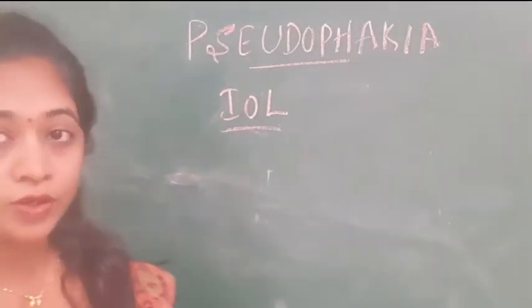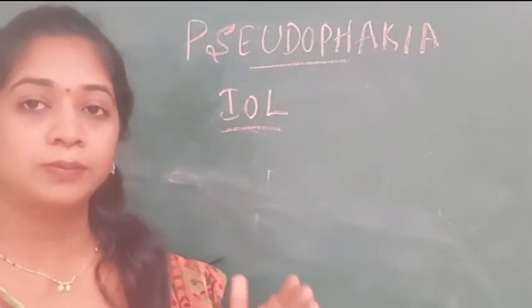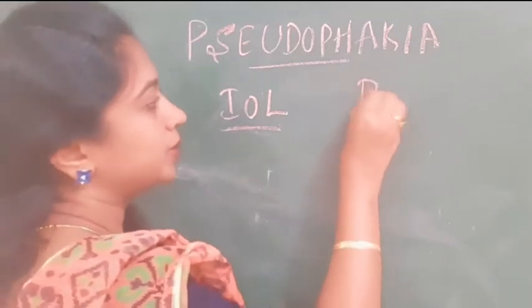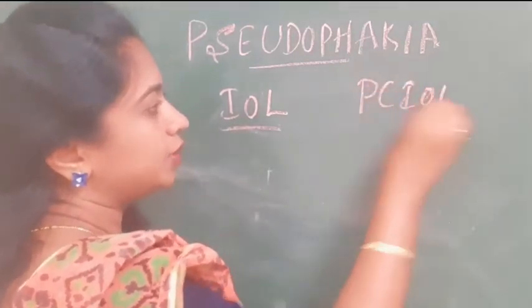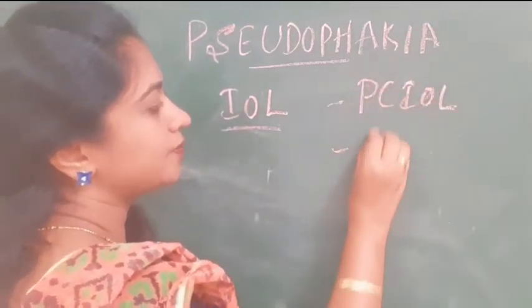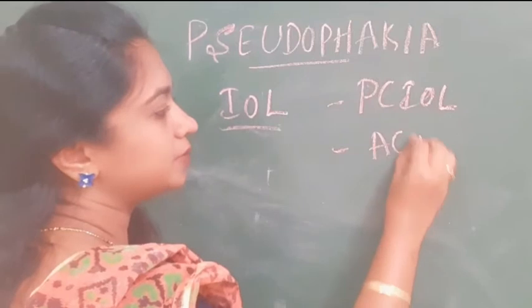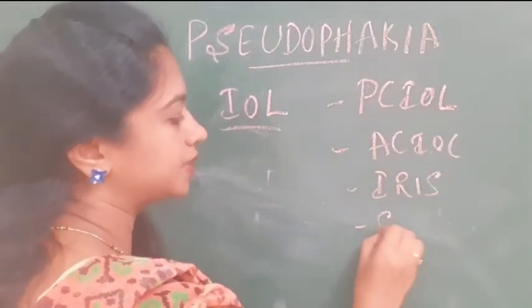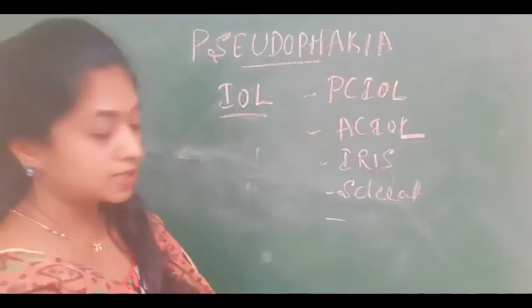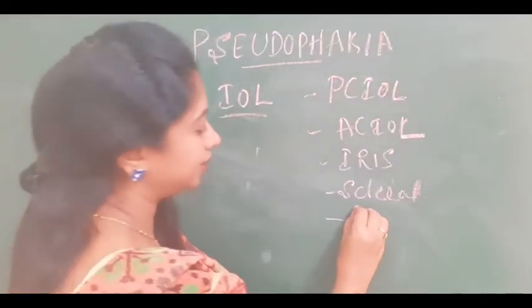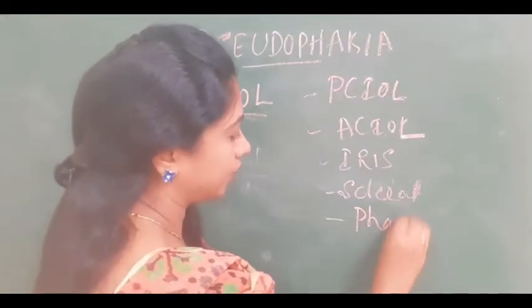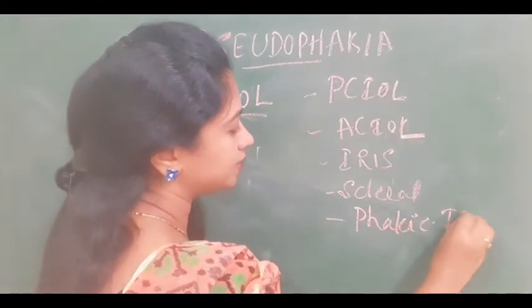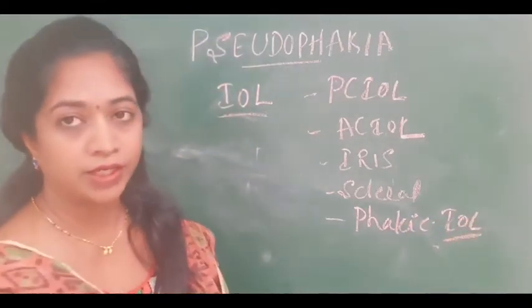What are the types of intraocular lenses? Depending upon the place or the site where it is placed, as I told in my previous video, it is classified into posterior chamber intraocular lens, anterior chamber intraocular lens, iris fixated lenses, scleral fixated lens, as well as phakic IOLs, which are used in very high refractive errors.